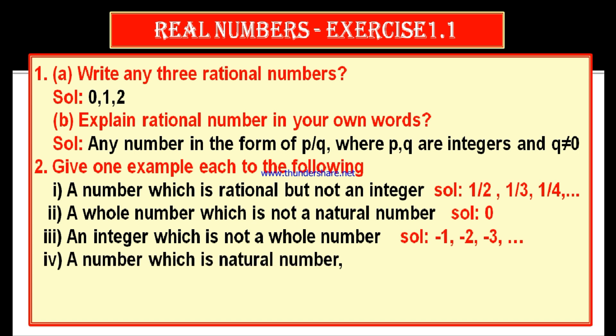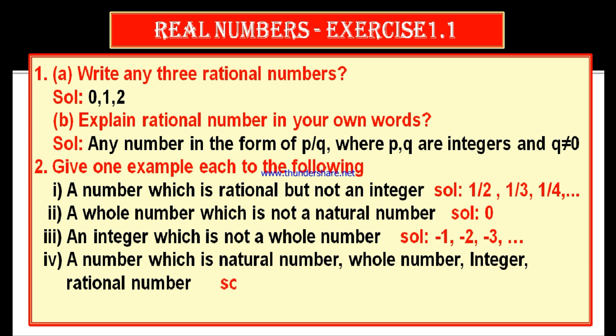Fourth bit: a number which is a natural number, whole number, integer, and rational number. We know that every natural number is a whole number, every natural number is an integer, and every natural number is a rational number. Therefore, in order to answer this, it is better to give natural numbers.